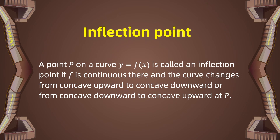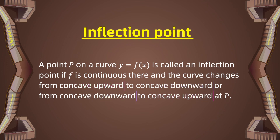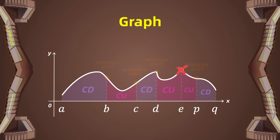With this definition in mind, we can define the inflection point. A point p on a curve y equals f(x) is called an inflection point if f is continuous there and the curve changes from concave upwards to concave downwards, or from concave downwards to concave upwards. Looking at the graph, points b, c, d, and p are all inflection points since the concavity changes. However, point e is not a point of inflection, because the concavity changes from concave up to concave up again, which does not fit the definition.